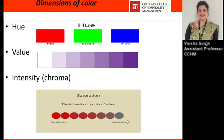What is hue? Hue is a term that is used to indicate the name of the color, such as red, blue, yellow, green — any color. The difference between blue and green is the hue. It indicates the position of the color on the color wheel, and also indicates the warmth or coolness of a color.